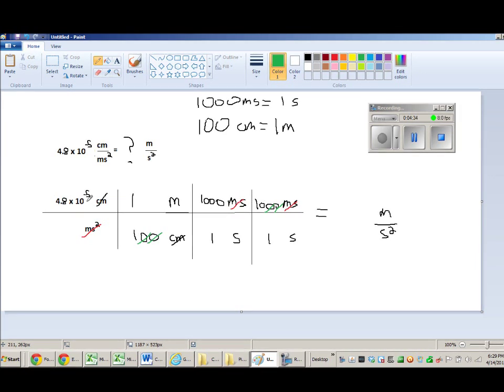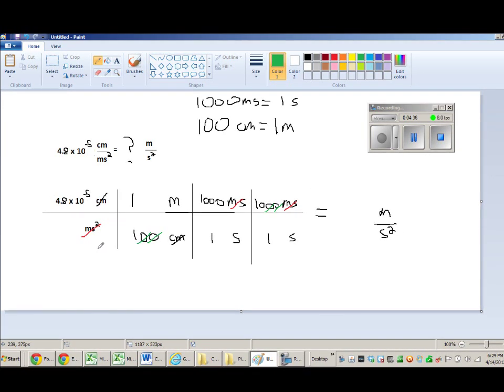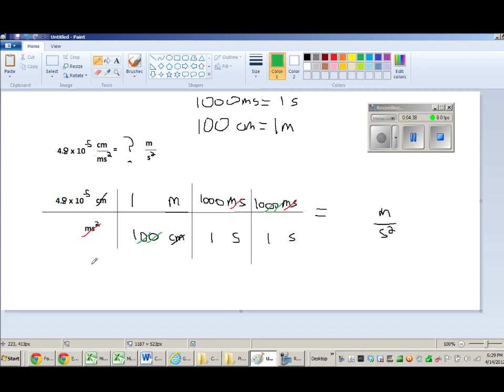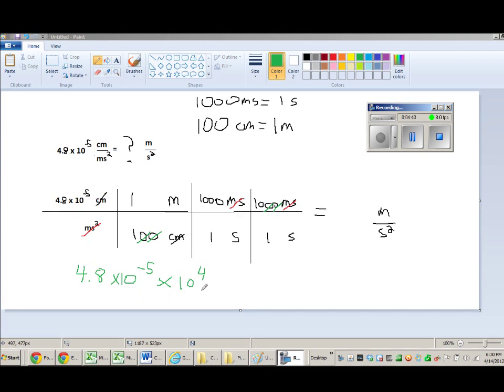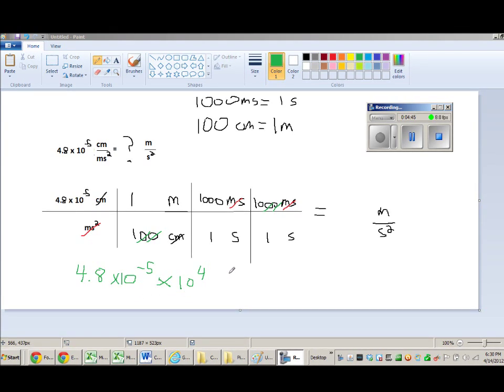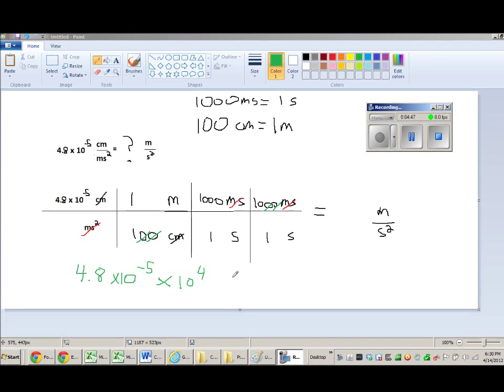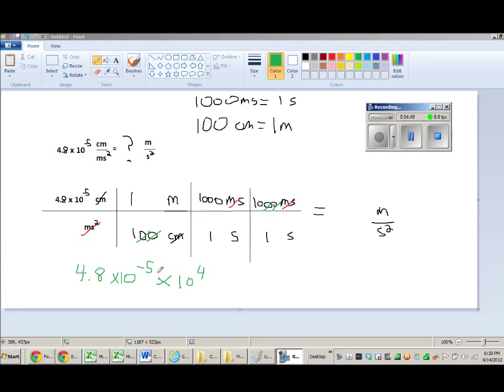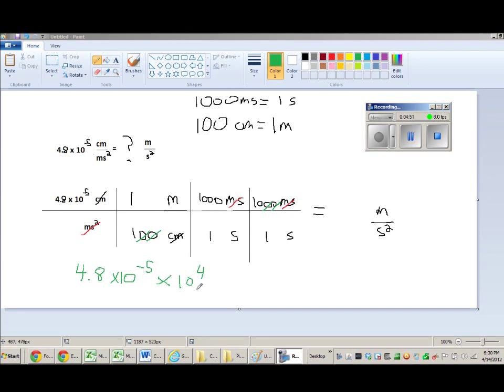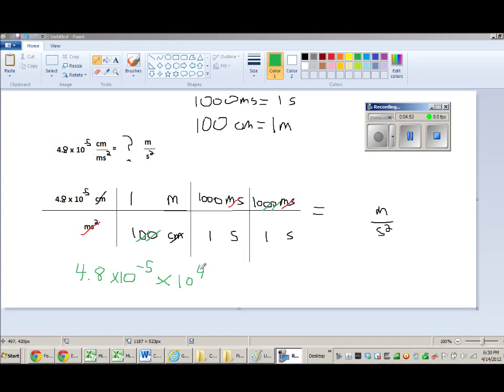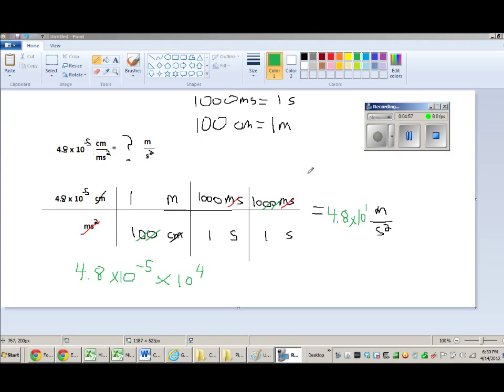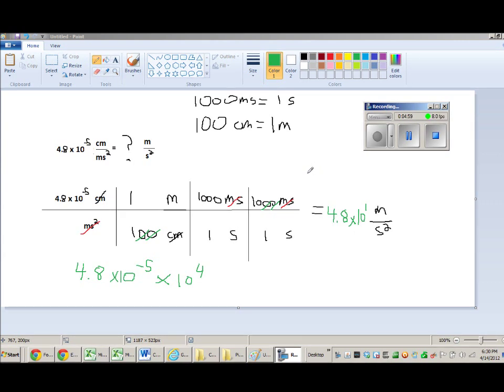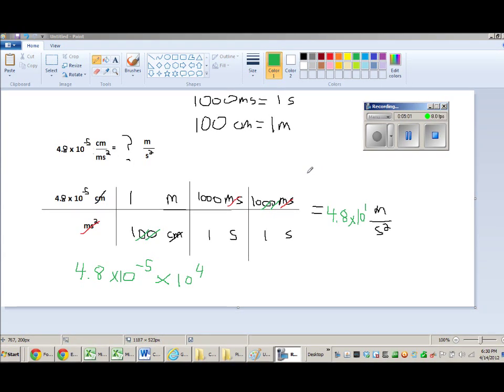And I'm going to have 4.8 times 10 to the negative 5th. And what that's going to look like is 4.8 times 10 to the negative 5th times 10 to the 4th. When I have that, I need to add the exponents together on this base 10 part. So negative 5 plus 4, that's going to be negative 1. So I end up with 4.8 times 10 to the negative 1st meters per second squared.